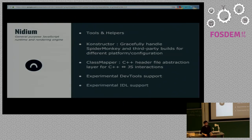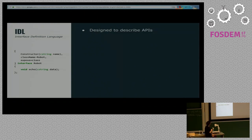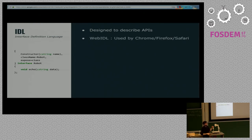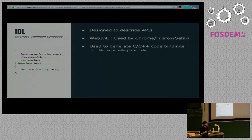The next thing I want to talk about is IDL — Interface Definition Language. It allows you to describe your API. Here's a short example: we have a constructor taking a C-string, and an echo method also taking a C-string. You've probably heard of WebIDL — it's used by Chrome, Firefox, and Safari to generate their bindings. The great thing about generating your bindings is that you no longer have to write all the argument conversion and type-checking manually — it will all be handled automatically.